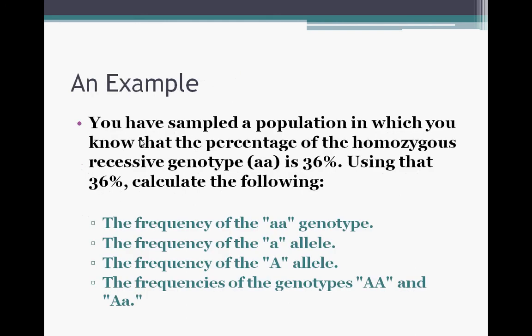Now here's the example we're going to work through. It says you have sampled a population in which you know that the percentage of the homozygous recessive genotype, little a, little a, is 36%. Using that 36%, calculate the following. We're going to calculate the frequency of the little a, little a genotype first. Then we're going to calculate the frequency of the little a allele. Then we're going to do the frequency of the big A allele. And then finally, we're going to plug all this in and figure out the frequencies of the genotypes, big A, big A, and big A, little a.